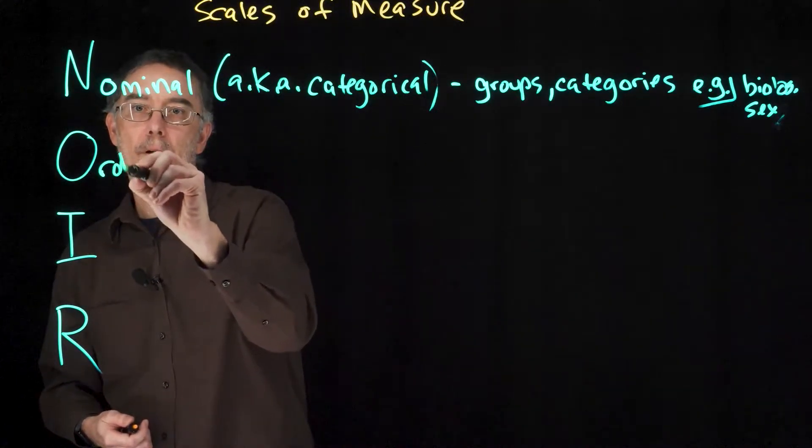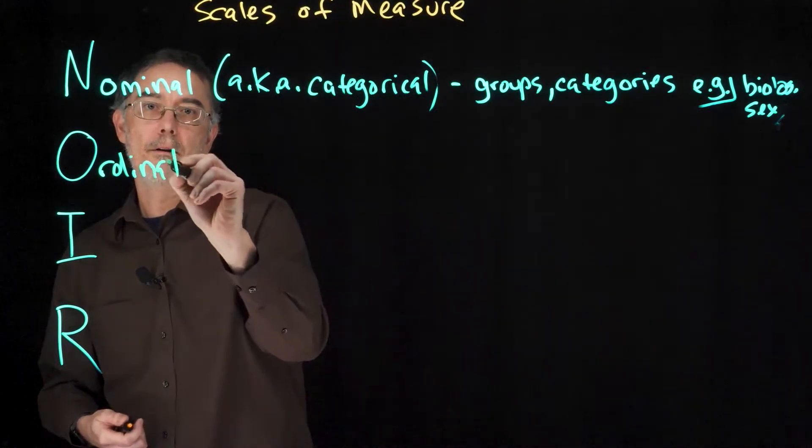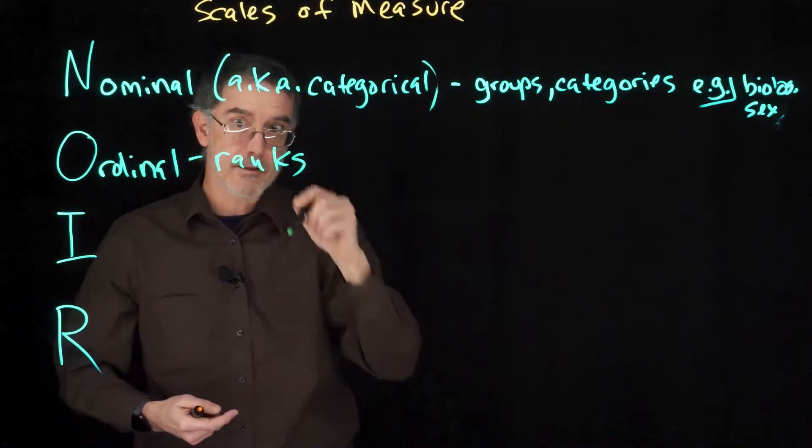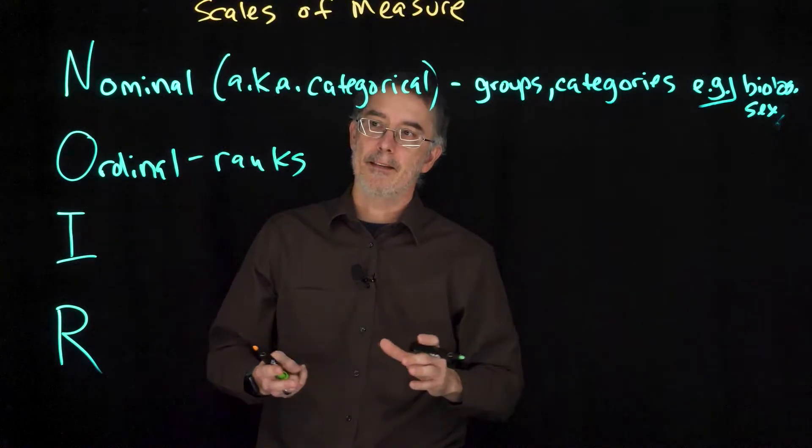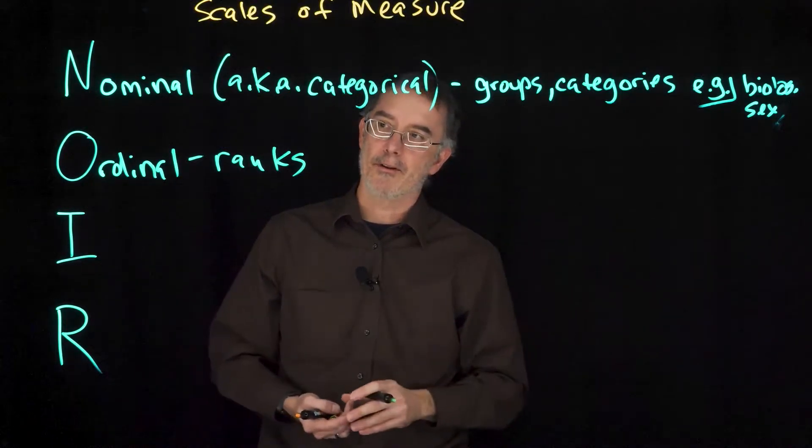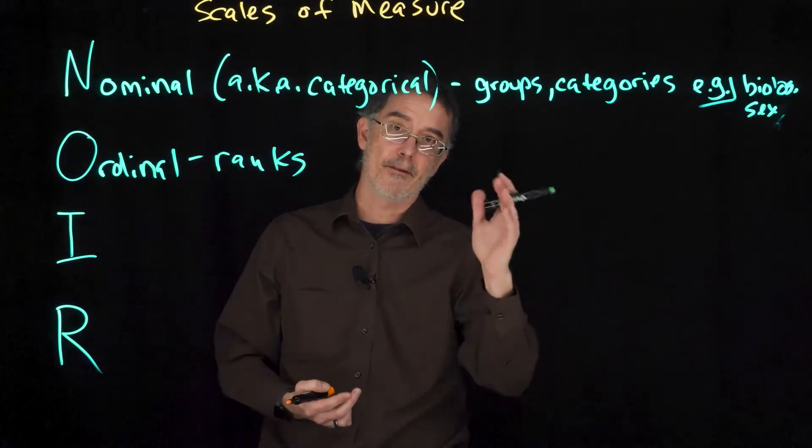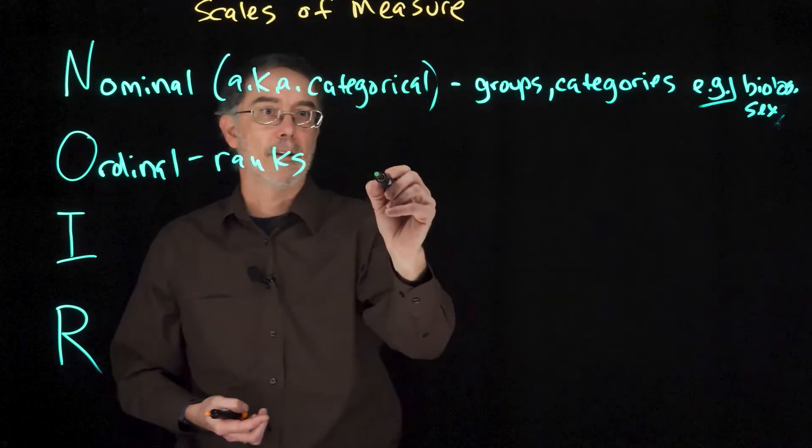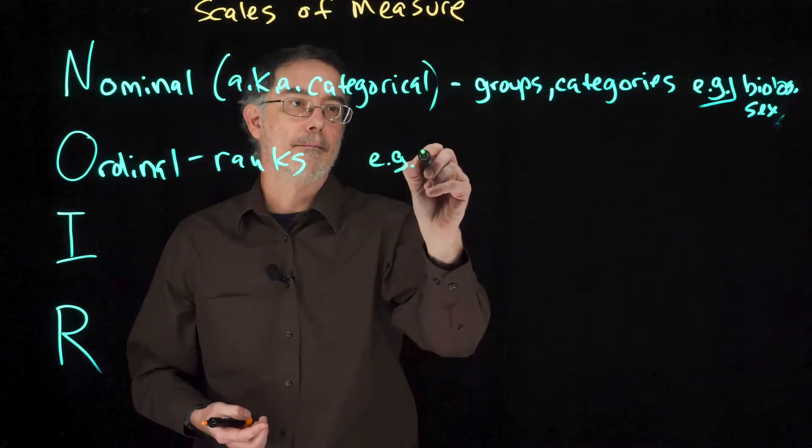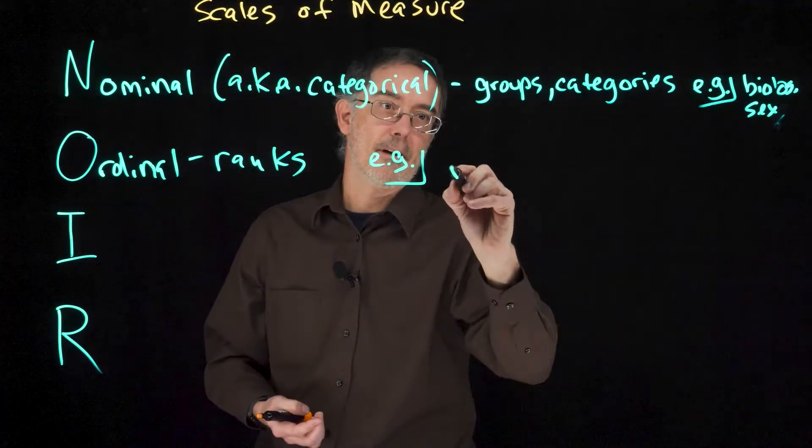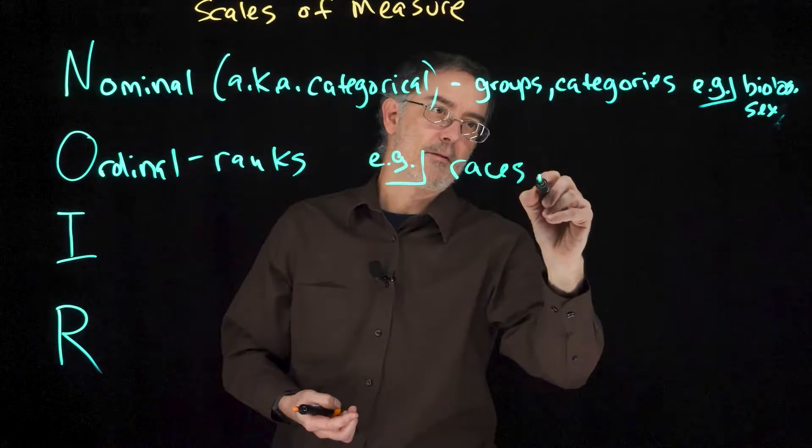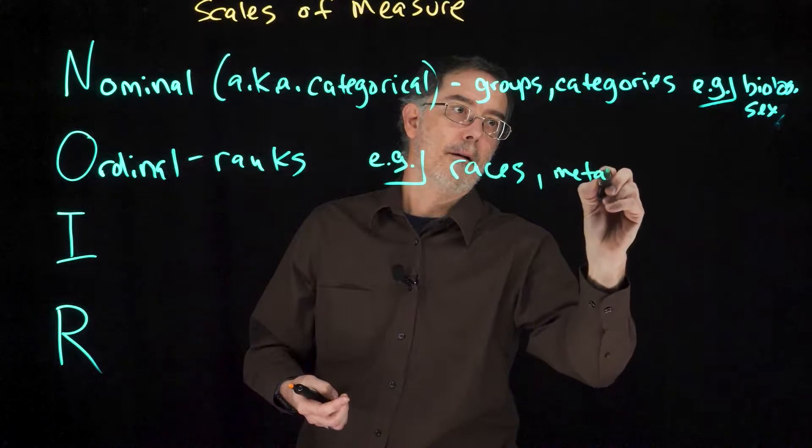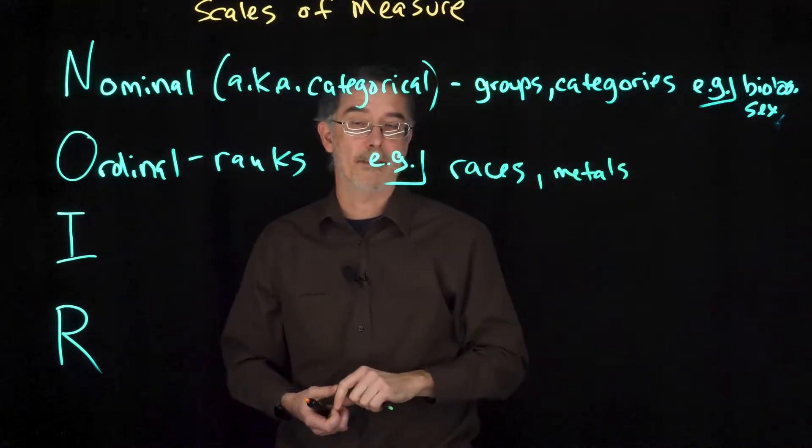O is for ordinal variables. These are ranks. These are something that people are familiar with from competitions where you have first place, second place, third place, fourth place, and so on. Those are their ranks. Examples of this are races, or more specifically like gold medal, silver medal in the Olympics and things like that.